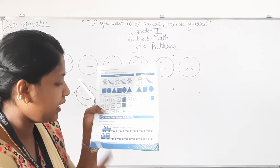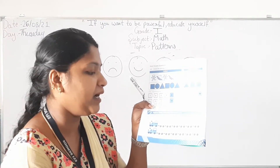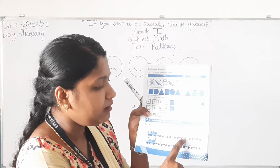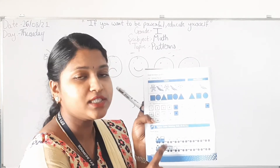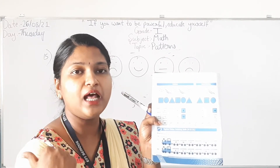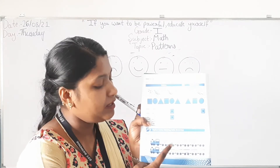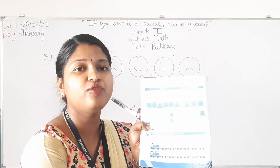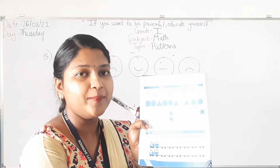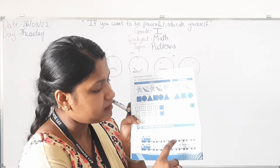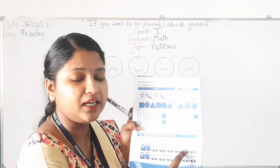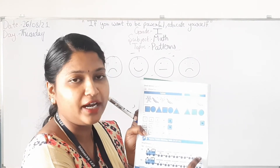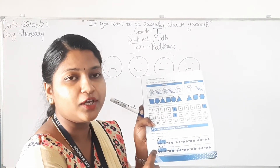Question number 18: Complete the given pattern. Question A: 19, 18, 17, dash, dash, dash. The numbers are in reverse — from largest to smallest. After 17 comes 16, then 15, then 14. Similarly, complete question number B.